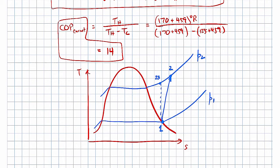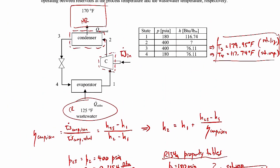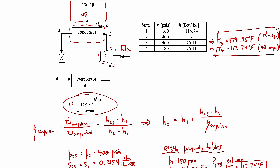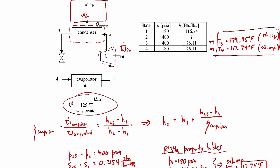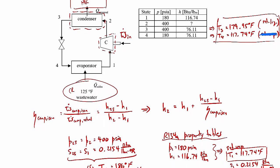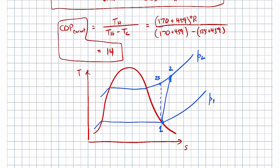State 3 is a saturated liquid, so we go from state 2 along the isobar over to state 3 on the left side of the vapor dome. State 4, going through the expansion valve, is a saturated liquid-vapor mixture inside the dome. From state 4 to state 1, that's along the lower isobar (P1 = P4, P2 = P3). That's the complete cycle path.